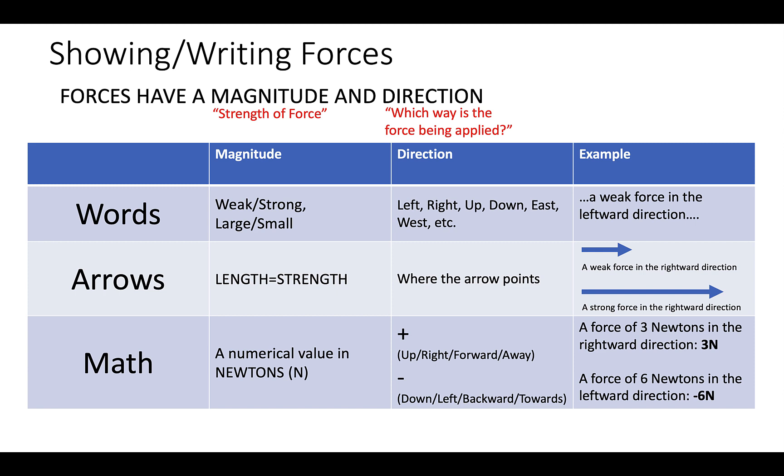For example, we can indicate a force of three newtons in the rightward direction by writing positive three newtons, and a force of six newtons in the leftward direction by writing negative six newtons. Using the sign indicates our direction, the number value tells us how strong the force is, and forces are measured in newtons.